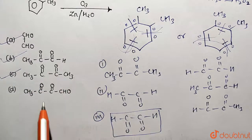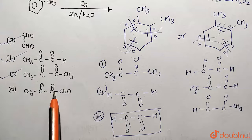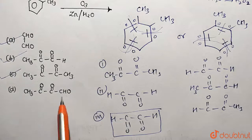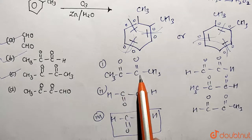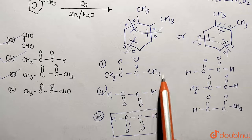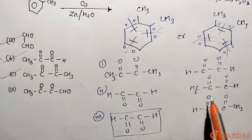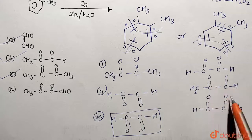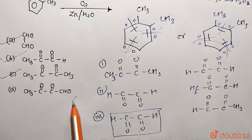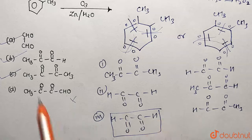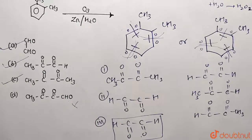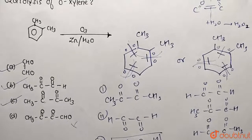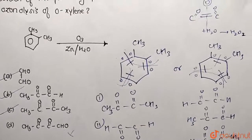The last option requires two ketonic groups and one aldehyde, but no such combination with an aldehyde can be found among the products. So that option cannot be obtained. The rest of the options can be obtained as we have seen from the reaction. That was the solution — thank you.